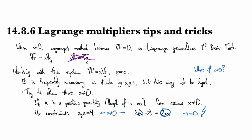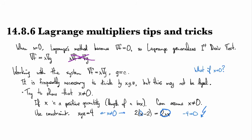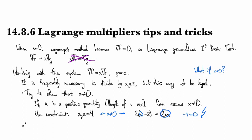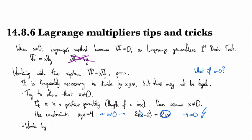What else can you do? Well, if you can't guarantee that x is not equal to zero, then you can kind of rule it out. So in other words, we work by cases.